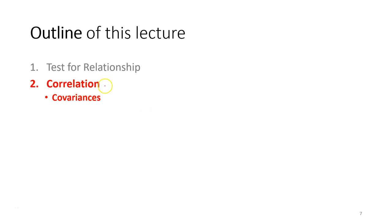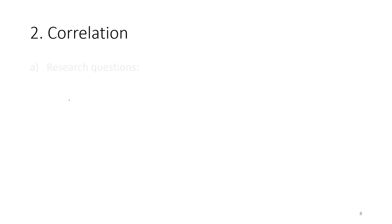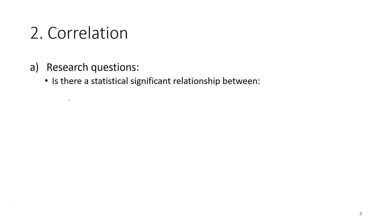We are going to discuss in more detail what is a correlation. One of the important concepts you have to understand is the covariance. The way that we can investigate the correlation between two variables depends on the covariance.